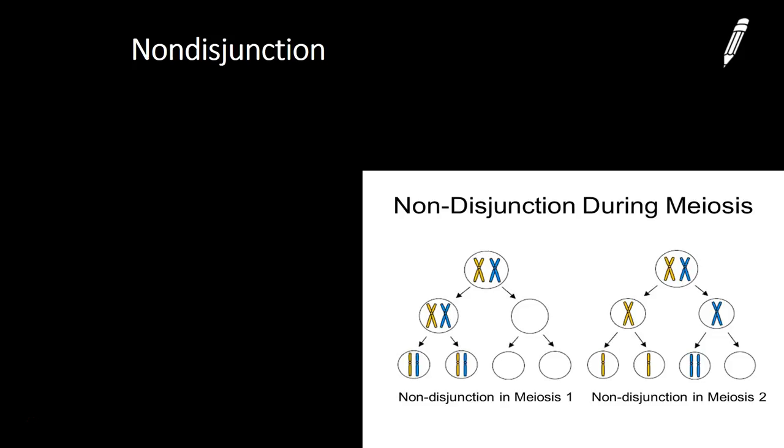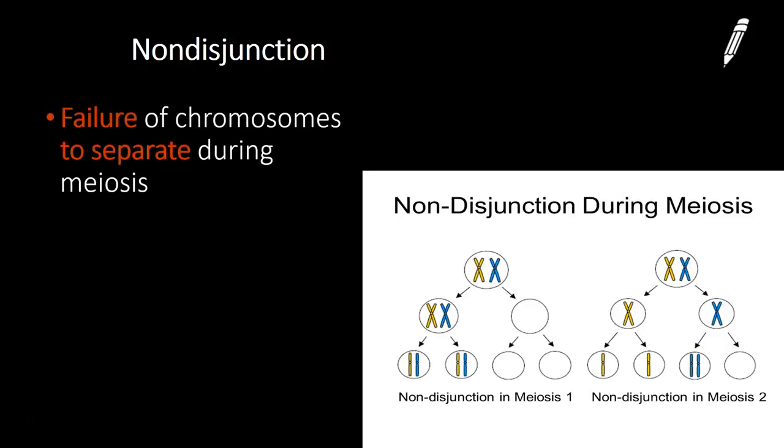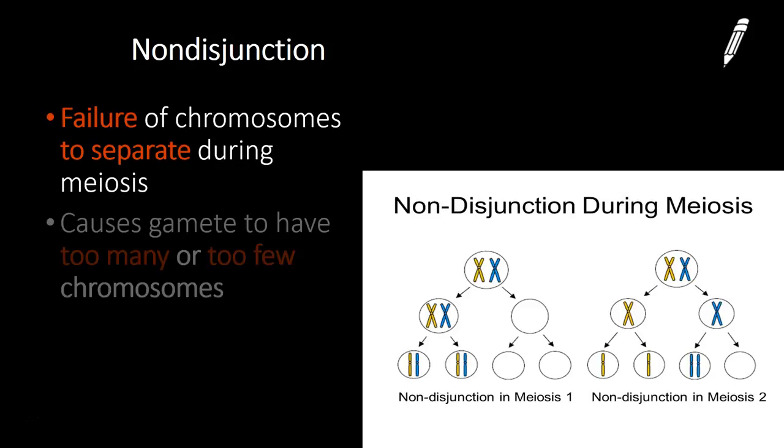So non-disjunction, this one's a little bit different now. Non-disjunction is referring to chromosomes that don't separate properly during meiosis.